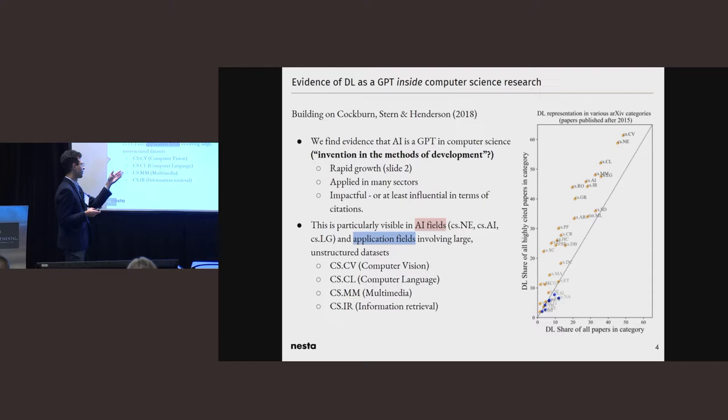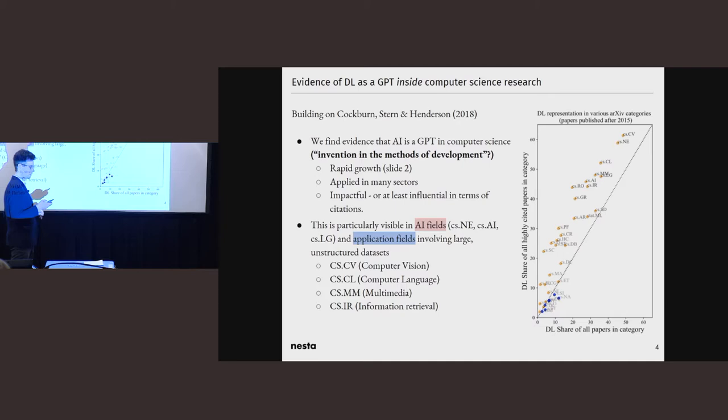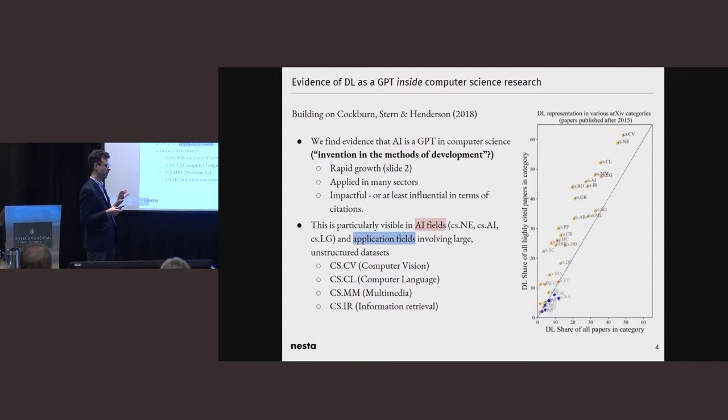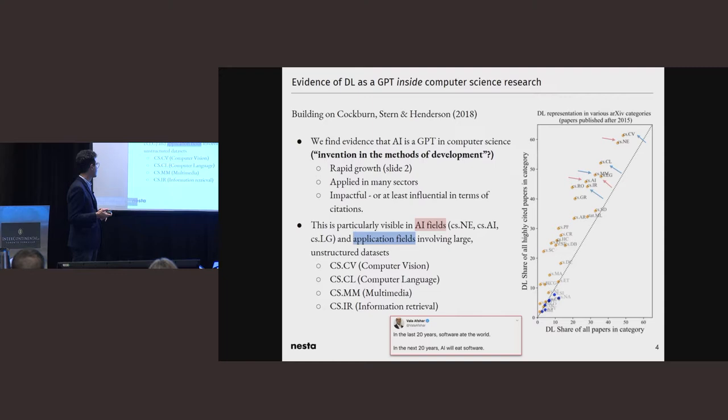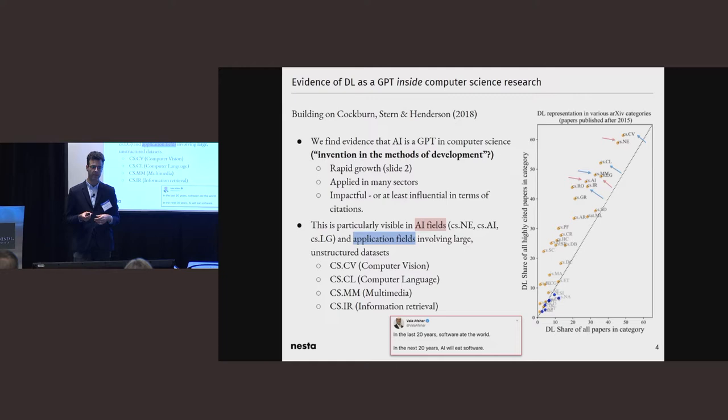And then we also find, this is what this is showing, that for most disciplines in Archive, deep learning papers are overrepresented amongst the highly cited, which is consistent with the idea that deep learning is, if not quite impactful, because we're not measuring impact here, at least it's being influential in the fields when it's published. This is consistent with this tweet I saw already Sunday about how, if in the last 20 years, software ate the world, in the next 20 years, AI will be eating software.